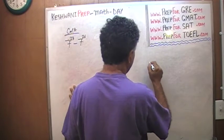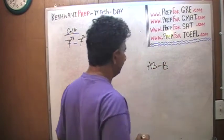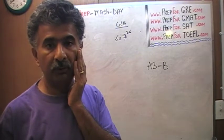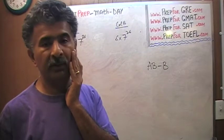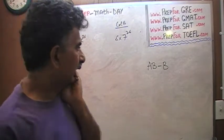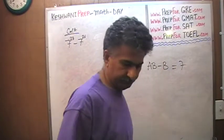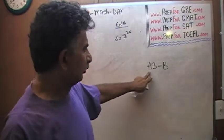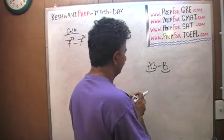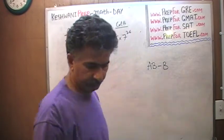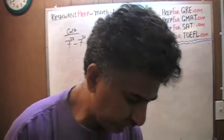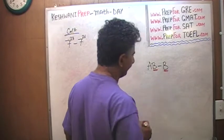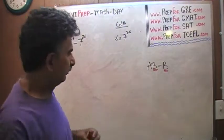Can you tell me how to simplify the expression A times B minus B? And don't say equation — it is not an equation. An equation has to have an equal sign in it. This is an expression, and it has two terms. Do you find anything common in the two terms? Yes — B is common in both terms, so let's take B out.